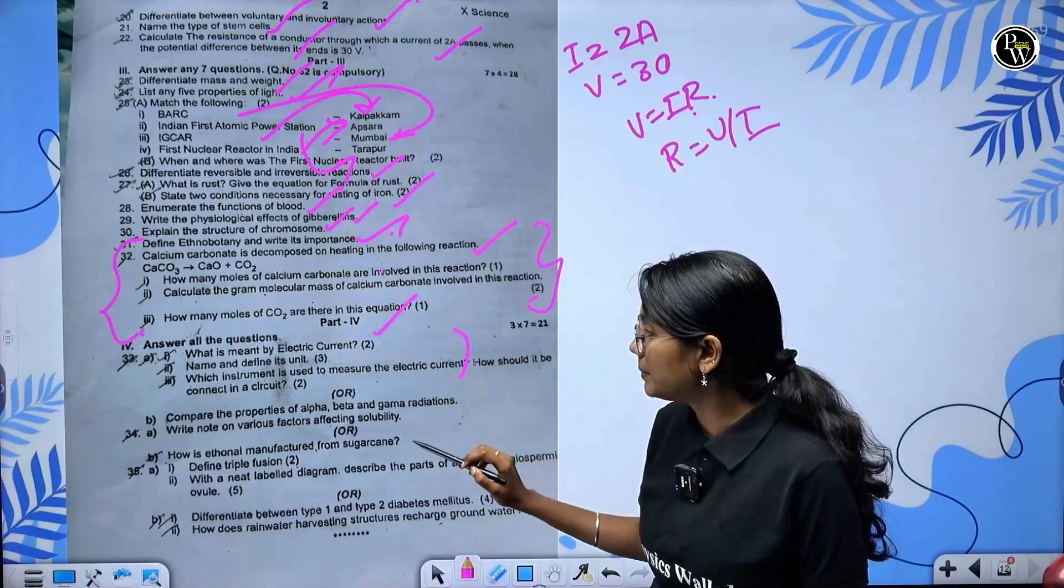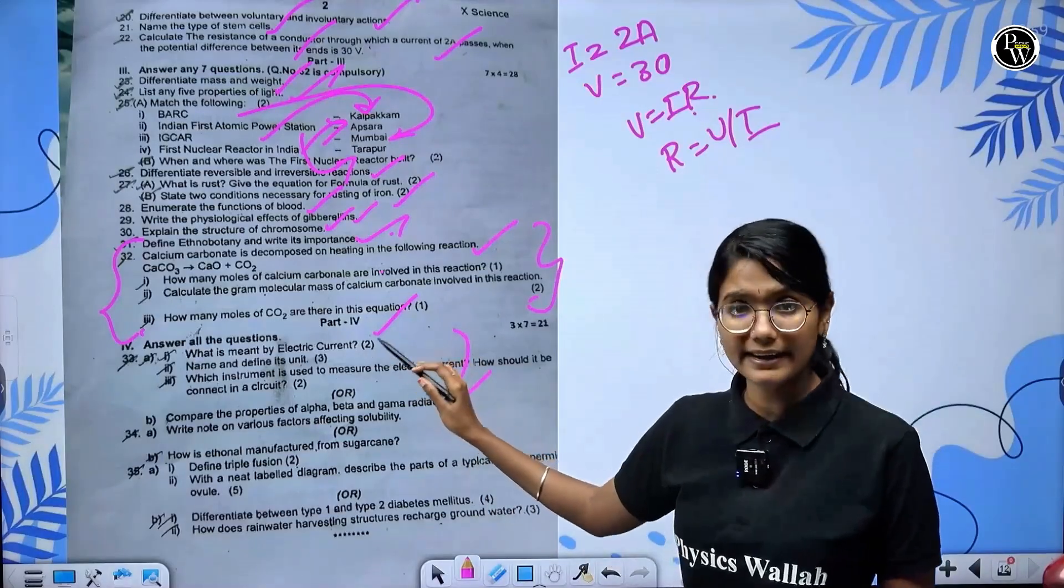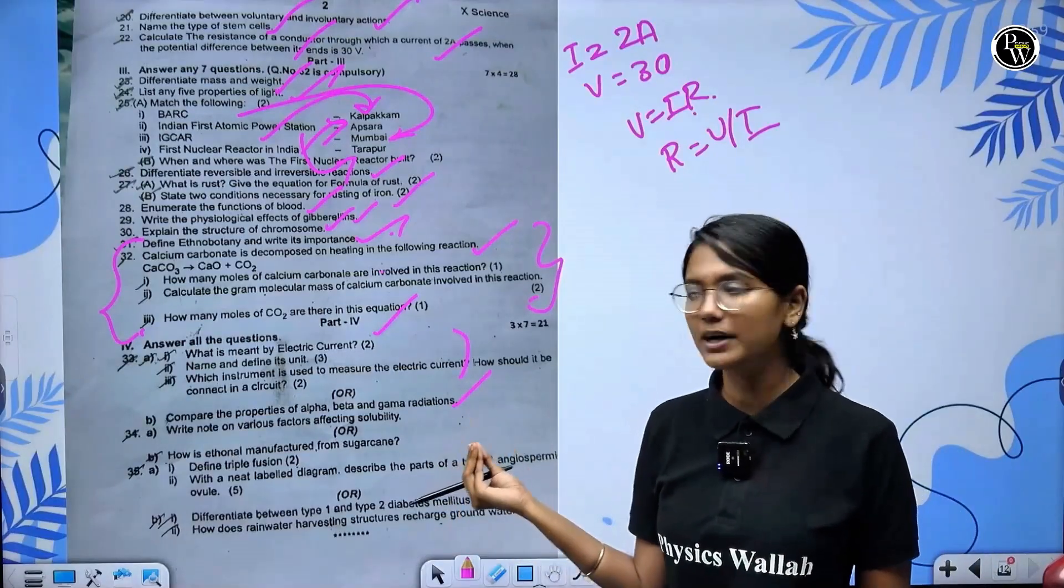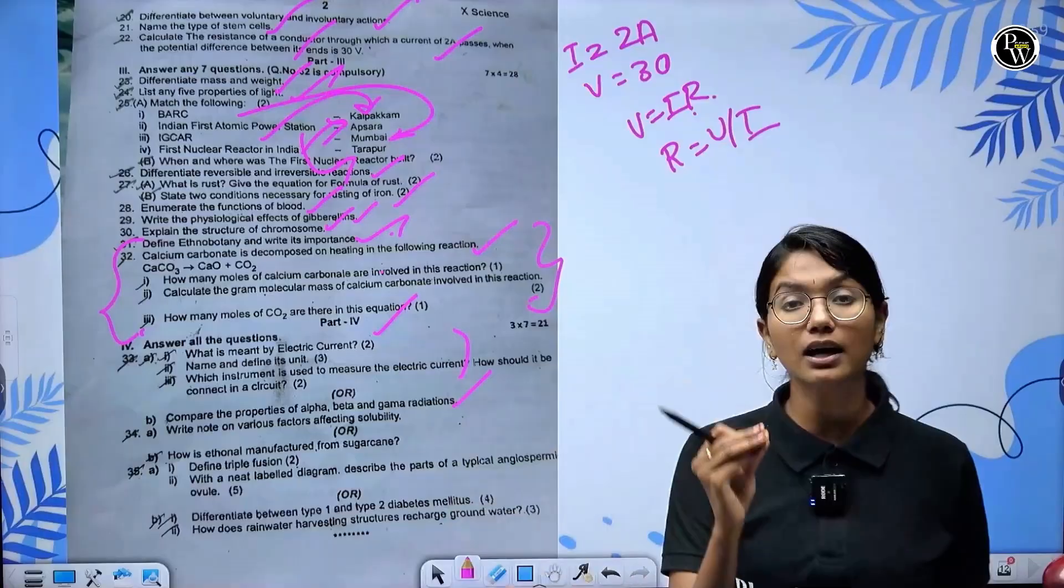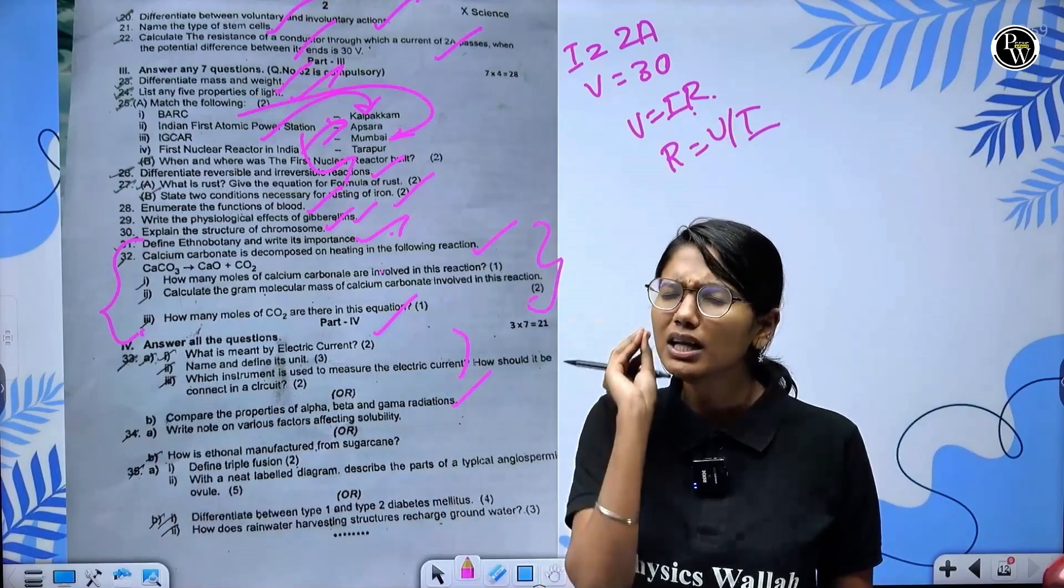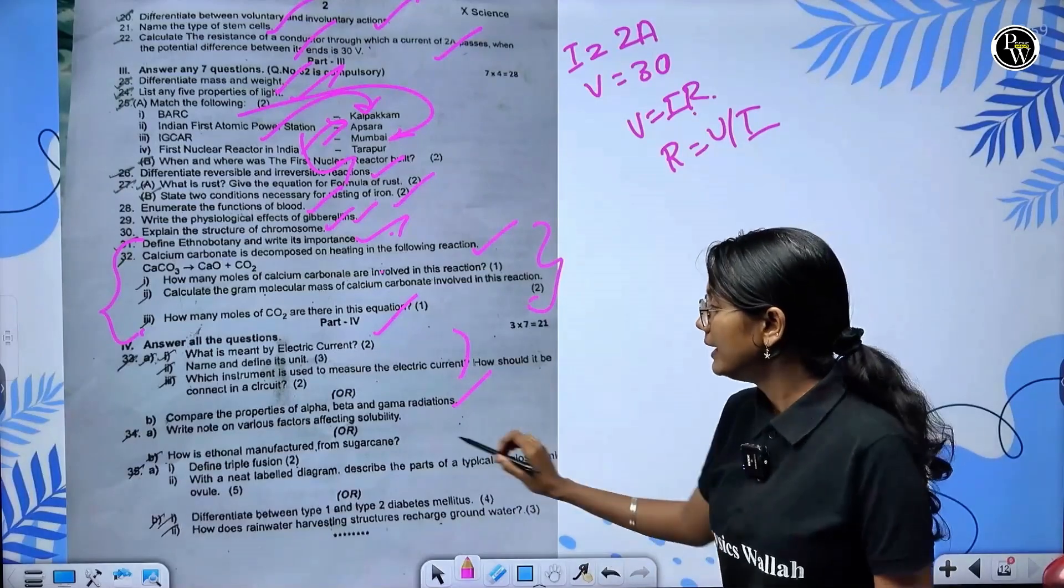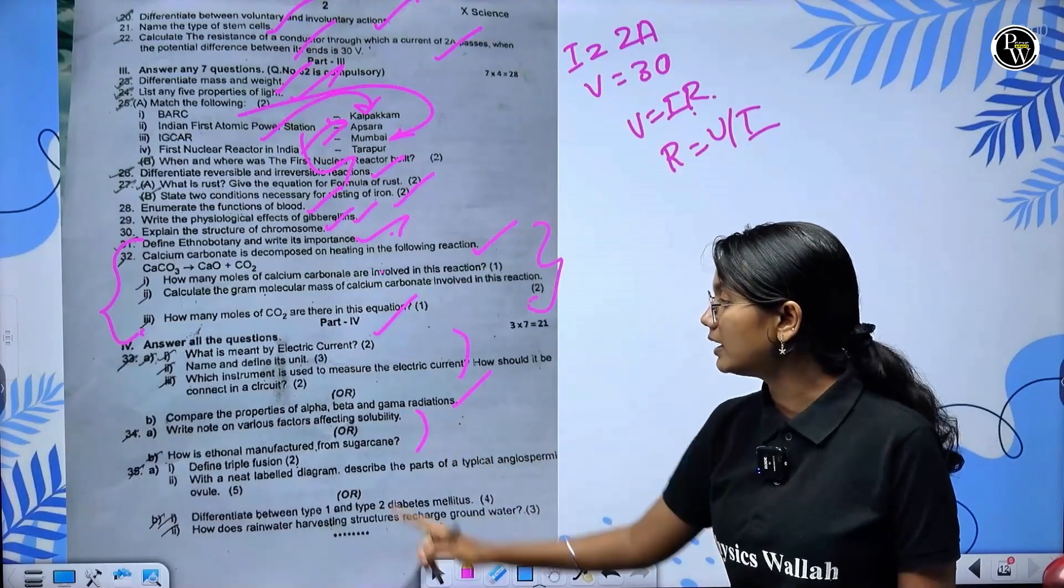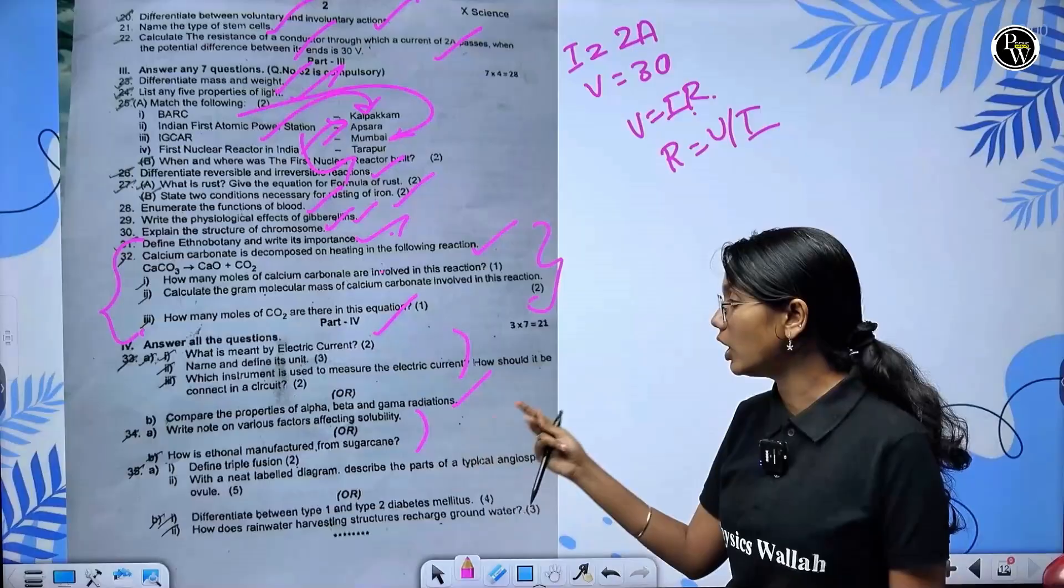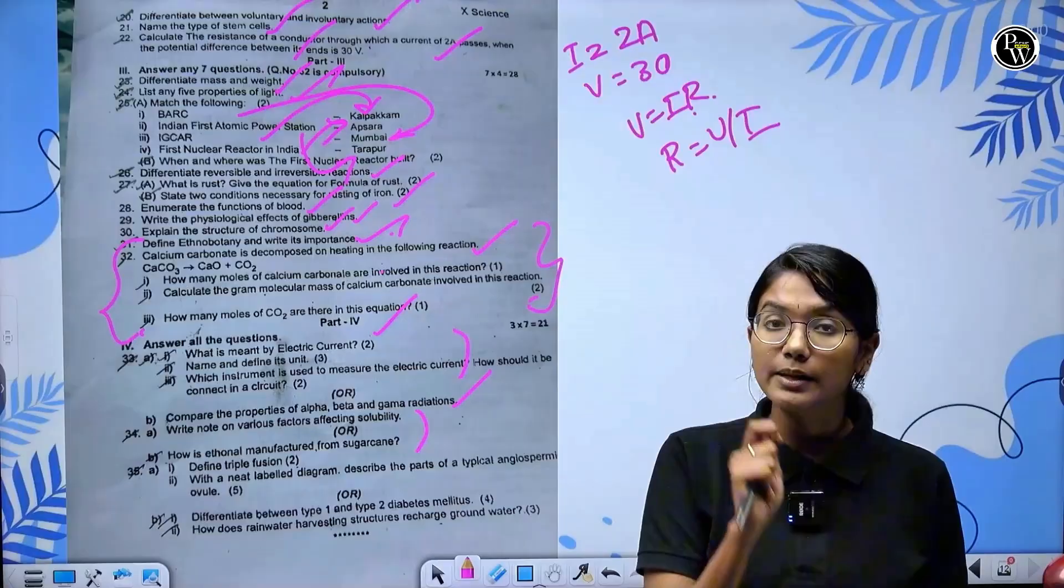Electricity chapter and Nuclear Physics chapter option. Electricity chapter - electric current, unit, and how to measure it. Nuclear Physics - differentiate between alpha, beta, and gamma rays. Study the table and nuclear components, and components of a nuclear reactor.